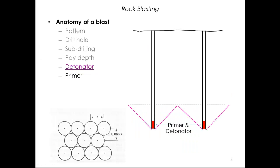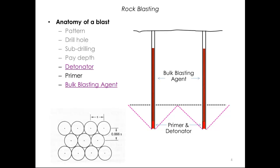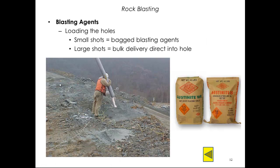So the detonator and primer are now in place. Next, we have the material that really does the work: the bulk blasting agent. Bulk agents are less expensive than dynamite and considerable volumes of them are usually used. On the left, we see the loading of a large hole directly from a bulk explosives truck, which is usually the case with large projects. On the right are the typical 50-pound bags that might be used on a smaller project.